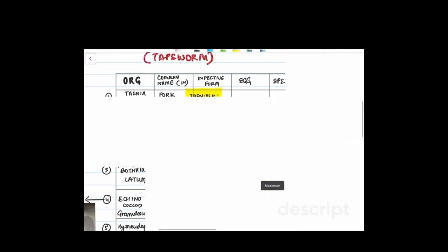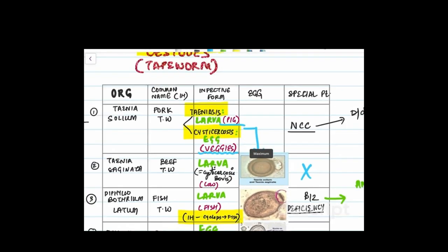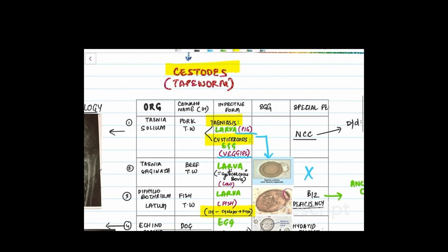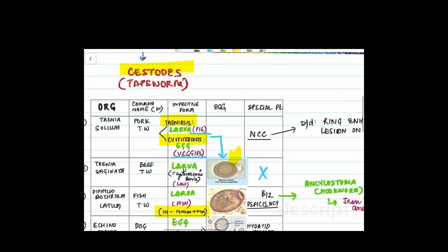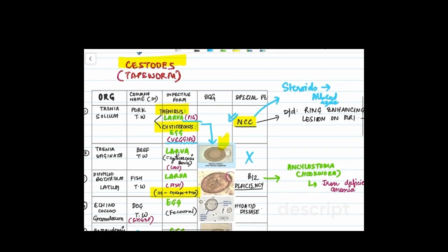Very important is the egg of Taenia solium which is very frequently asked as a previous year question. The next point is regarding neurocysticercosis which is very commonly asked both in microbiology and medicine. Discussing the treatments separately, we usually give steroids in the beginning and under cover of steroids we give the anti-parasitic drug that is albendazole.